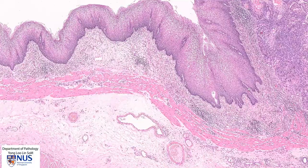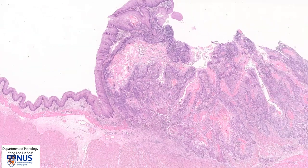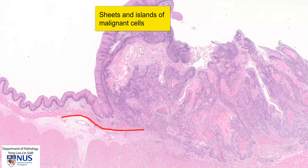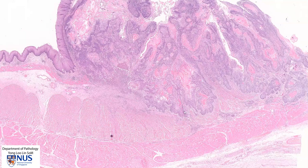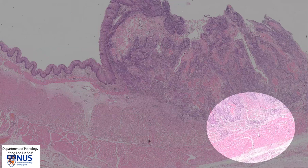Moving over to the abnormal area, on low magnification we can see that there is a mass formed of large islands of abnormal cells. We can just trace the muscularis mucosa here. These islands invade through the mucosa, coming down to just below the muscularis mucosa and definitely entering the submucosa. In this area we can actually see the invasive islands of cells coming into the muscularis propria, and in fact between the layers of the muscularis propria.